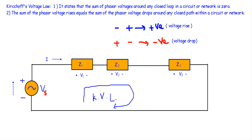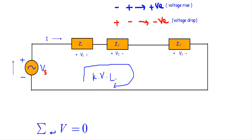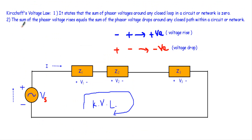This indicates that if I have several voltage components in a circuit, the sum of those phasor voltages — rotating in the clockwise direction — will be equal to zero. The second statement is that the sum of phasor voltage rises equals the sum of phasor voltage drops around any closed path within a circuit or network.